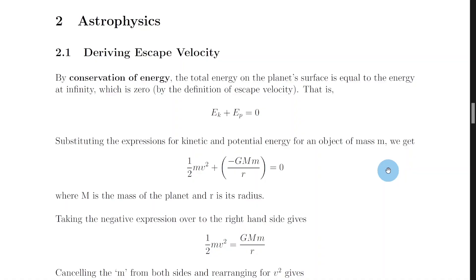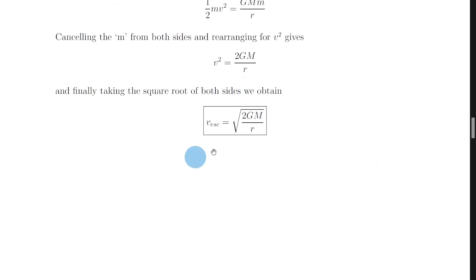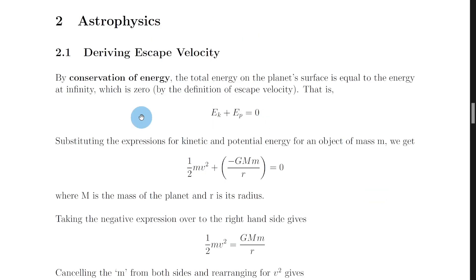Remember the equation for escape velocity is given on the relationship sheet in the exam, and it's this one here: v escape is equal to root 2GM over r, but we need to show how to get there. So how do we do that?